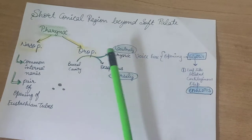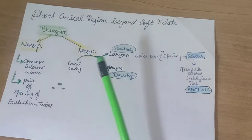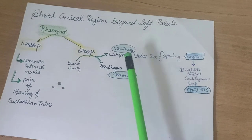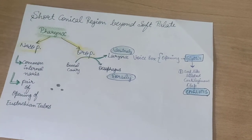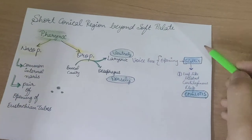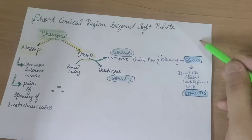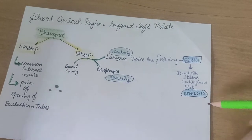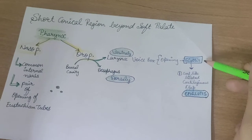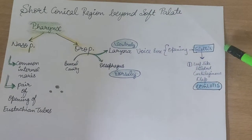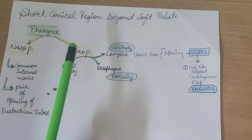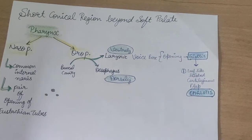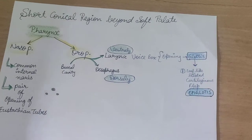The oropharynx connects the buccal cavity to the larynx in the ventral region, and connects the buccal cavity to the esophagus in the dorsal region. The larynx is also called the voice box, and its opening is called the glottis. The glottis opening is regulated by a flap-like structure called the epiglottis. The epiglottis is a bilobed, leaf-like cartilaginous structure that regulates the opening and closing of the glottis to prevent food from entering the voice box.